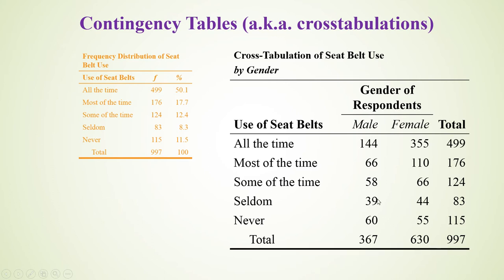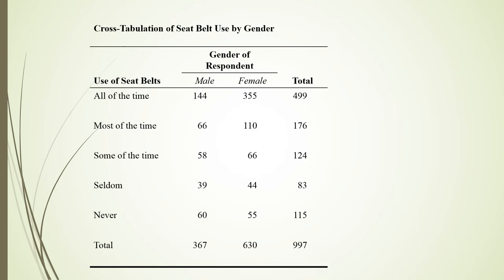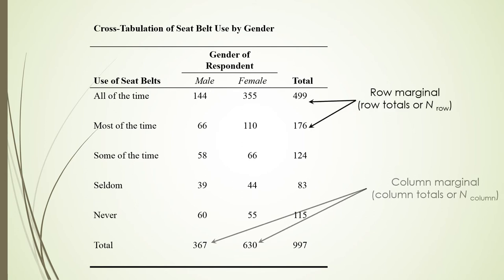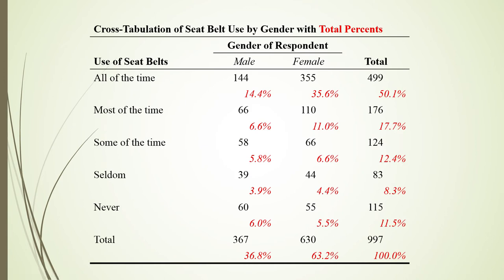Here we can see patterns according to the frequencies in those individual values, and this table gets used to build all sorts of other tables. This is a crosstabs of seat belt use by gender. Let's talk about row margins and column margins. We refer to the row sample size as n-row, and the column sample sizes as n-column.